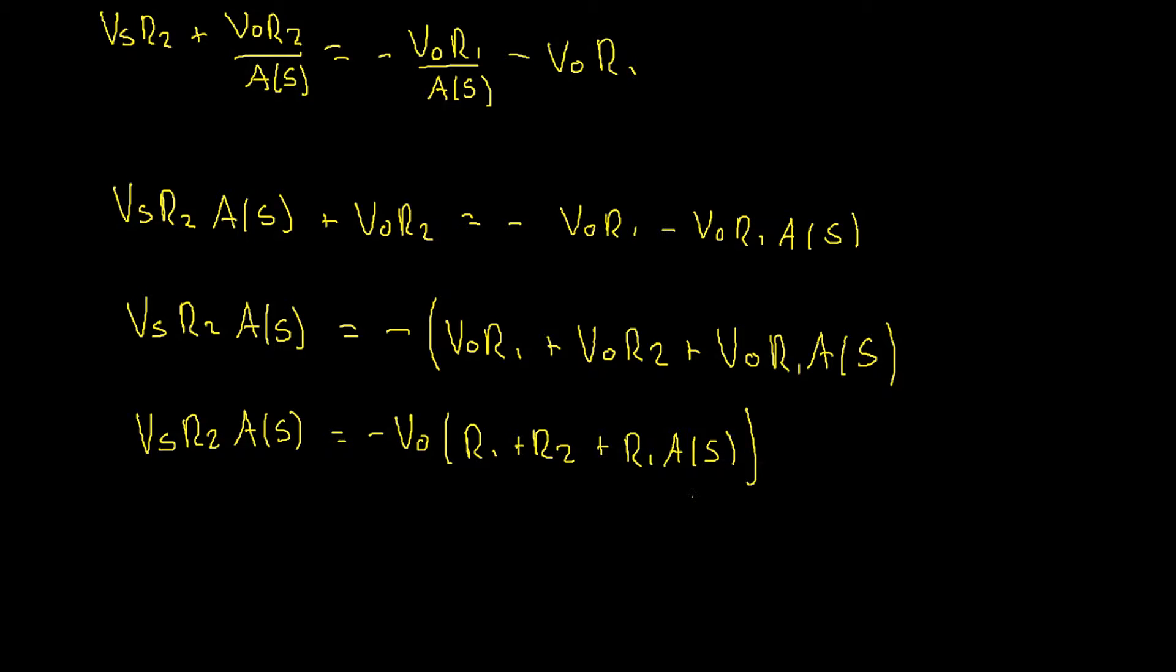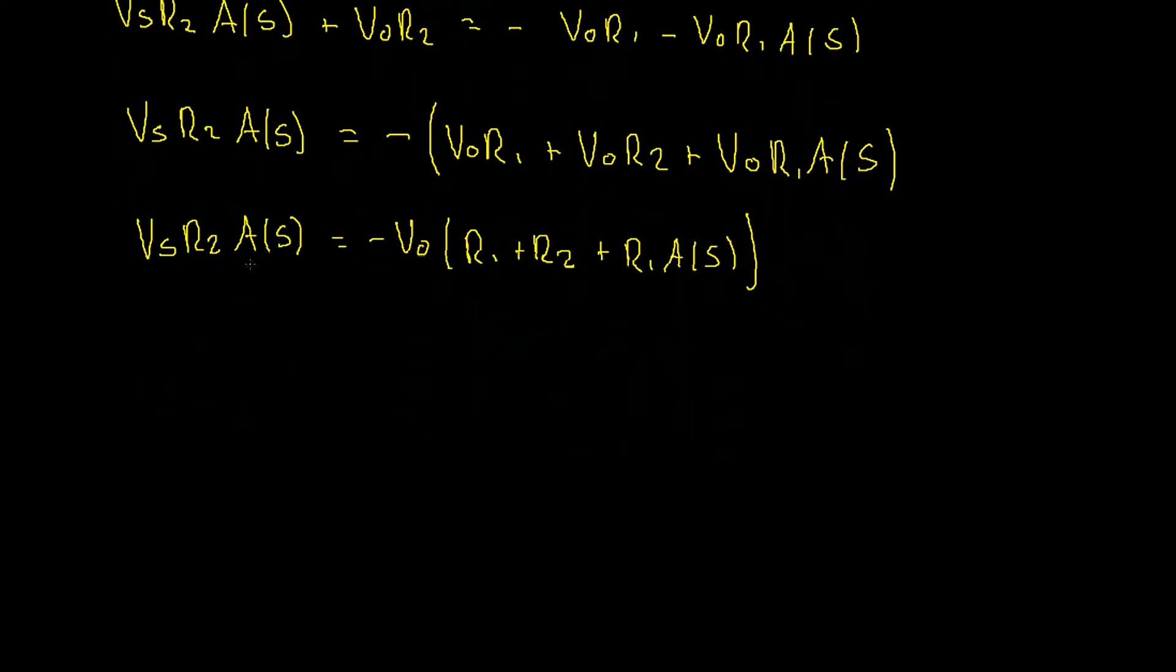Now let's remember our end goal here. We're trying to find vo divided by vs. Let's collect all of our vo terms on one side and all of our vs terms on the other. Luckily all we need to do is take away vo r2 from both sides. This gives us vs r2 A(s) equals, the vo r2 cancels. Let's take the minus out the front of this one as well. vo r1 plus vo r2, remember the minus is distributed, plus vo r1 A(s).